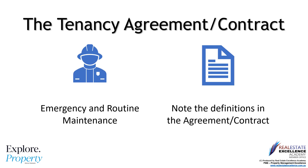The standard terms of the Tenancy Agreement contract Form 18A set out the legal definition of what is emergency maintenance and what is routine maintenance. Please note the definitions in the agreement. As stated, everything is legally required to be in writing under this tenancy contract. However, if you have an emergency repair situation as per the definition, please phone our agency and refer to the agreement for emergency after-hours contact details and procedures — we'll confirm in writing at a later date.